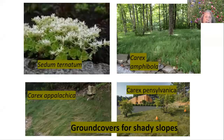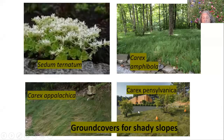Sedum ternatum is a sedum that will grow in the shade — almost all sedums in garden centers are for full sun, but this one does a great job of filling in so you wouldn't have to mow. And here are three Carex species or sedges — they're rather grass-like and lay down more in the shade, but they provide a great ground cover preventing erosion. Carex pennsylvanica can handle some sun as well as part sun. We have them in full sun at the healing garden, but carexes are really adaptable to a lot of different conditions and would keep you from having to mow on that slope.